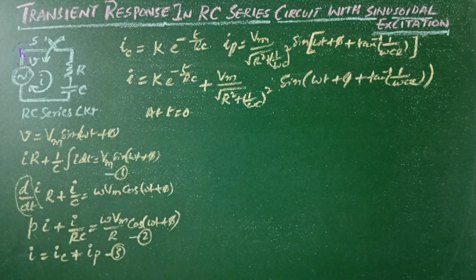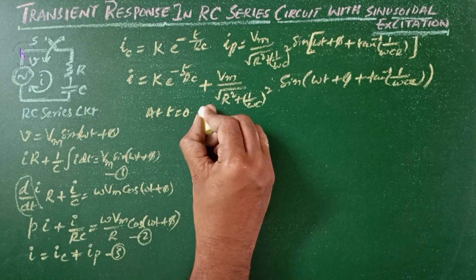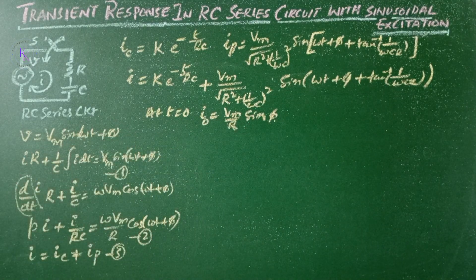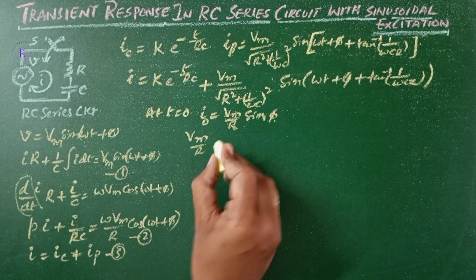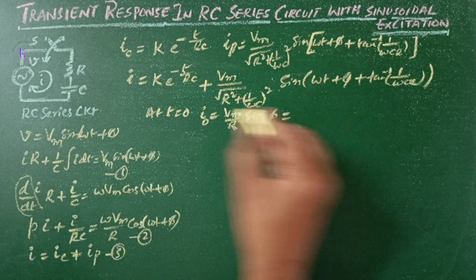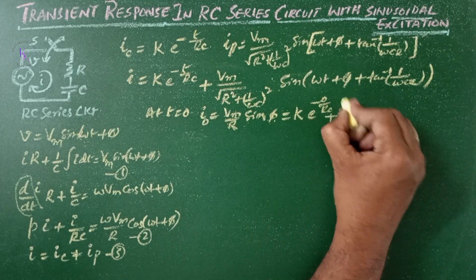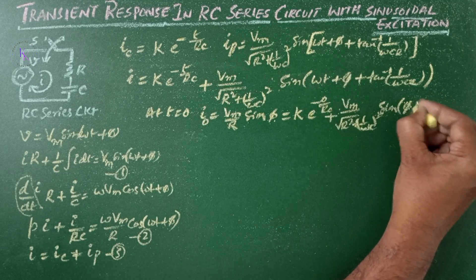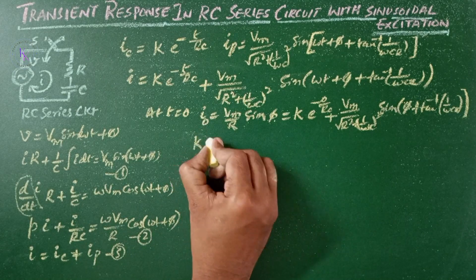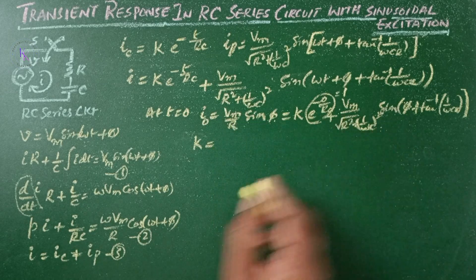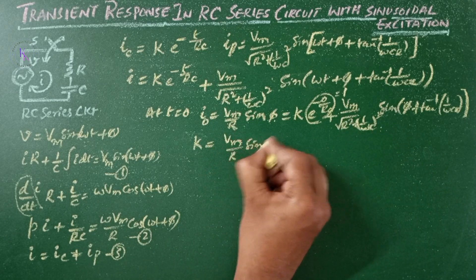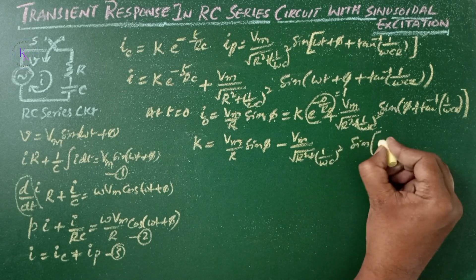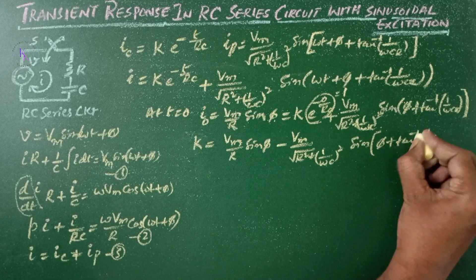Now at t equals 0, the capacitor C acts as a short circuit. Then the initial current I₀ equals Vm/R · sin(φ). To find constant K at t equals 0: Vm/R · sin(φ) equals K·e^(0) plus Vm/√(R² + 1/(ωC)²) · sin(φ + tan⁻¹(1/(ωCR))). Therefore K equals Vm/R · sin(φ) minus Vm/√(R² + 1/(ωC)²) · sin(φ + tan⁻¹(1/(ωCR))).